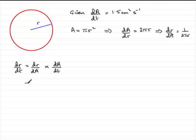So I can put this in here as 1/(2πr) multiplied by dA/dt, which is 1.5. If you clean this up, what you get is 3/(4πr).